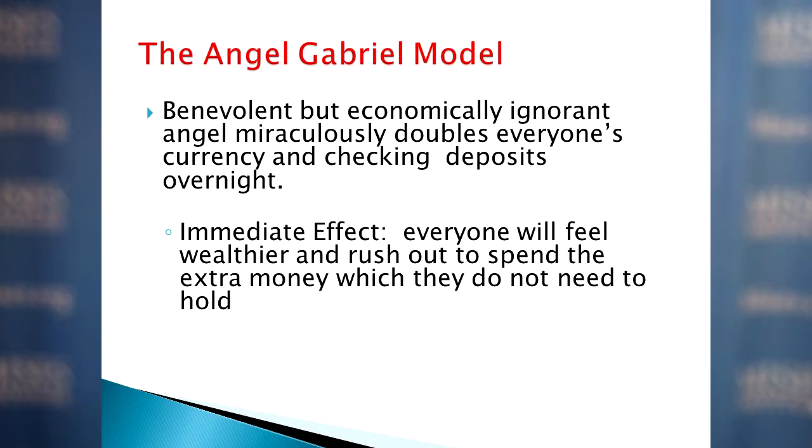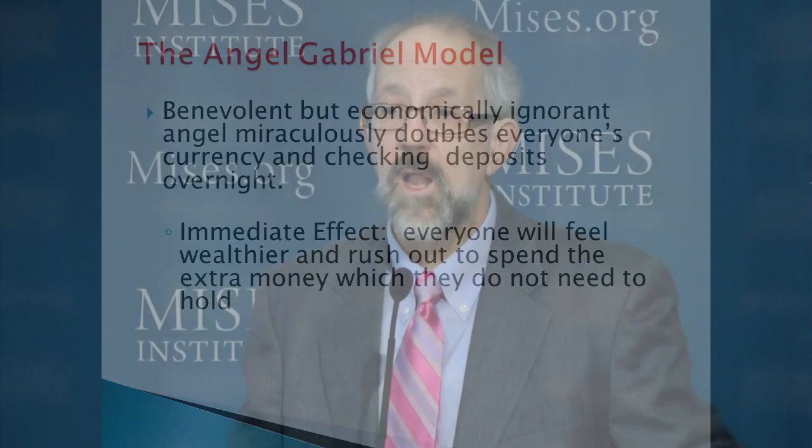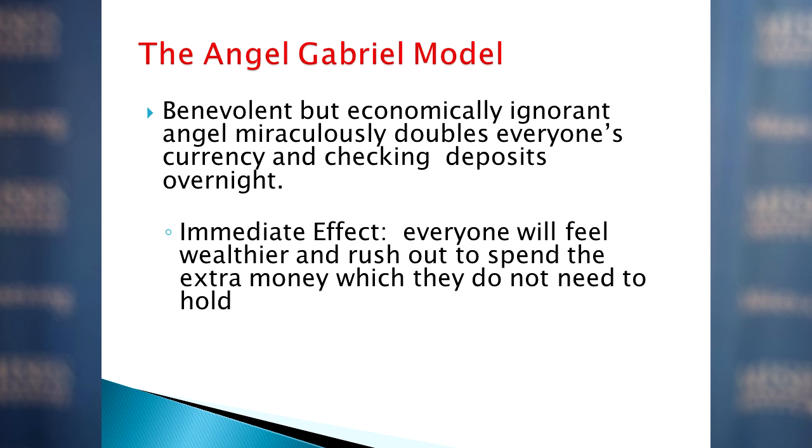We have something that Murray Rothbard used to call the Angel Gabriel model. Let's say you have a benevolent angel, but he's economically benighted — he doesn't know anything about economics. He notices that every time someone gets a raise or wins a lottery and has more paper dollars, they live better and can buy more goods and services. So he thinks, if this is true for one person, let me benefit humanity by doubling everybody's money holdings — checking accounts, wallets, everything. The next day, everybody wakes up and feels wealthier. They rush out to spend the extra money, because you only need so many dollars for your usual transactions, and anything more is excess money burning a hole in your pocket.